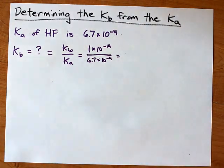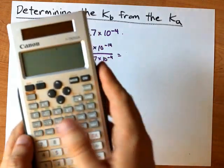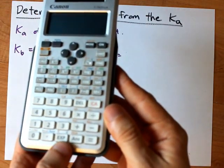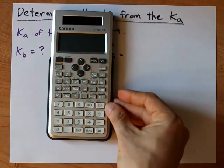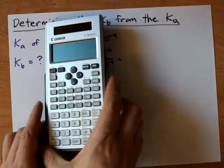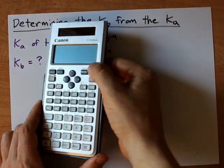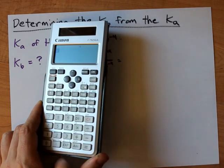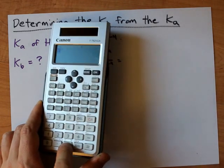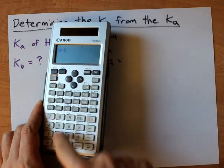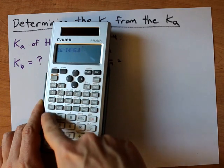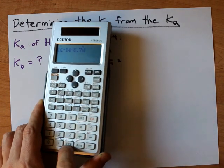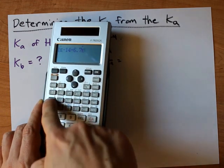Now, on the calculator, to get that times 10 to the power of, you're going to want the EXP button. I've seen it also written as EE before, but it gets you the scientific notation here. I'm going to bend this so you can see it. 1 EXP, that's times 10 to the power of negative 14, divided by 6.7 times 10 to the power of negative 4.